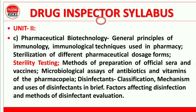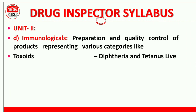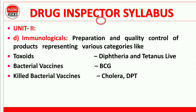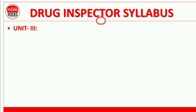You need to study immunological preparations and quality control of products representing various categories: toxoids, bacterial vaccines such as BCG, killed bacterial vaccine, cholera, DPT; viral vaccines like polio, rabies, and smallpox; and anti-toxins such as diphtheria antitoxin. These are very important topics from Unit 2.